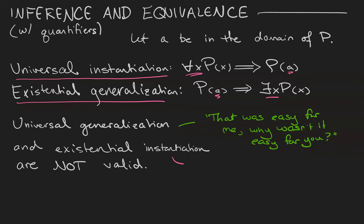Existential instantiation is somebody saying, maybe in a murder mystery, someone was the culprit. So it must be you. Neither of these reasoning techniques is valid.